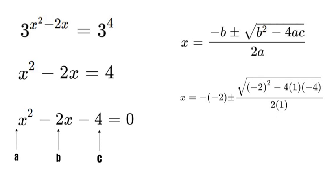Now, if we simplify that, we have x is equal to 2 plus or minus the square root of 4 plus 16 over 2. Now, let's break that down one step further. We have x is equal to 2 plus or minus the square root of 20 over 2.